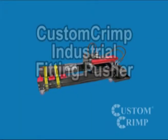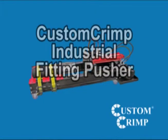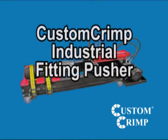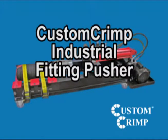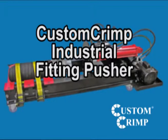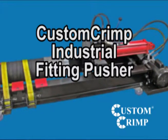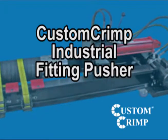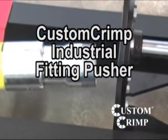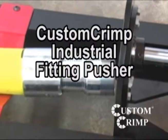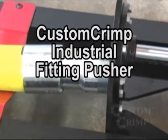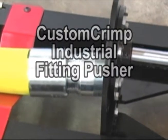While the determination of accurate crimp diameters is a significant factor in quickly and accurately crimping industrial hoses, Custom Crimp has also introduced the Industrial Fitting Pusher to speed and simplify the often difficult process of fitting insertion.